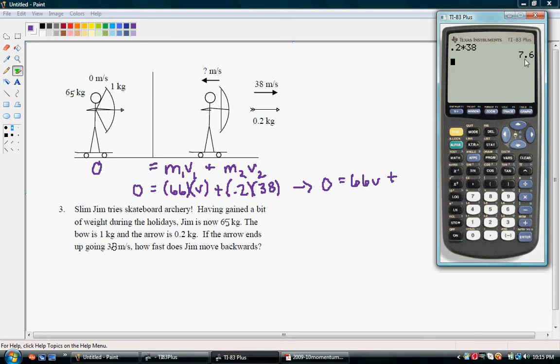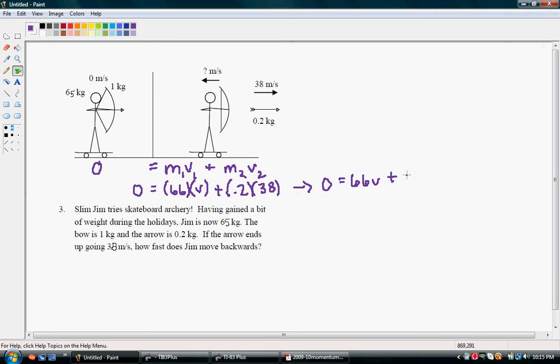Alright, so we get 7.6 for the momentum of the arrow.